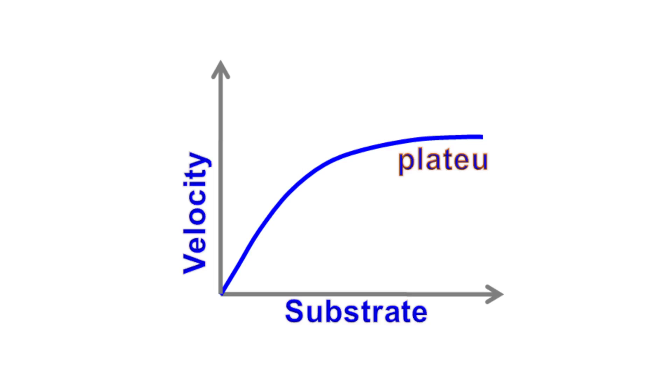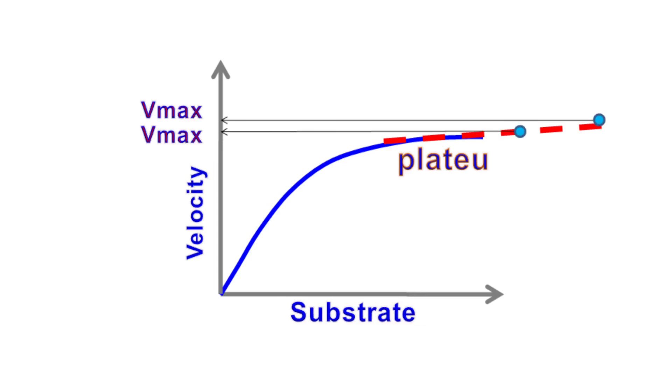Here is a problem with this graph. The plateau region is not perfectly horizontal. This means maximum velocity can be achieved only at infinite substrate concentration. Because of this, there is an error in the estimation of Vmax and Km.